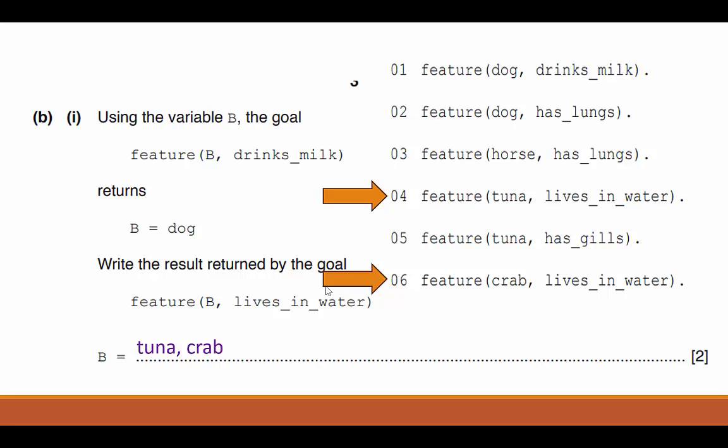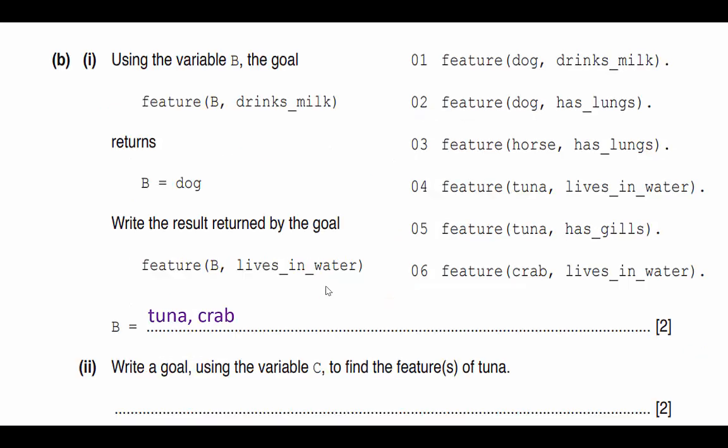Let's take a look at the next part of the question. So this says, using the variable B, the goal, that's the one we just did, now it wants us to write a goal using the variable C to find the feature or features of tuna.